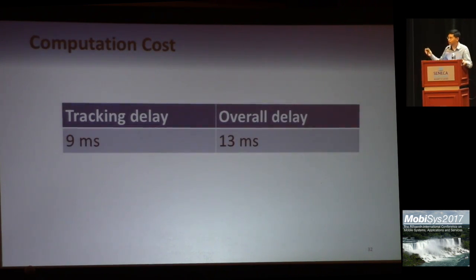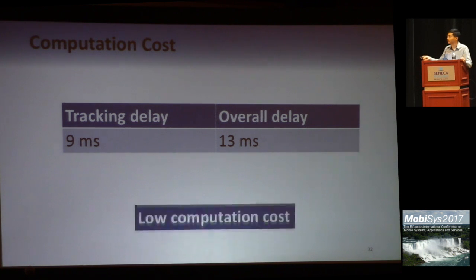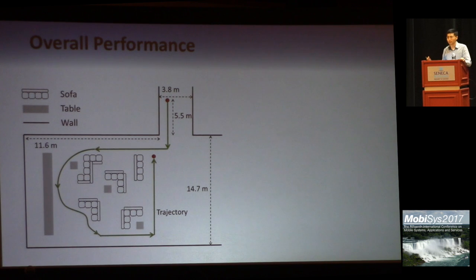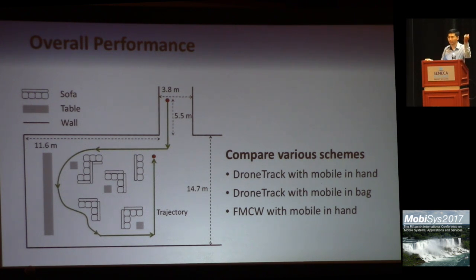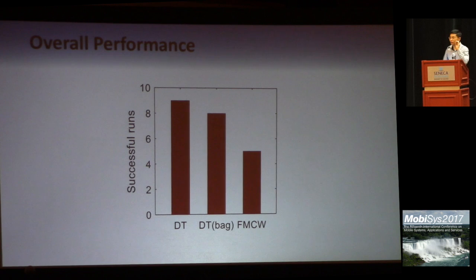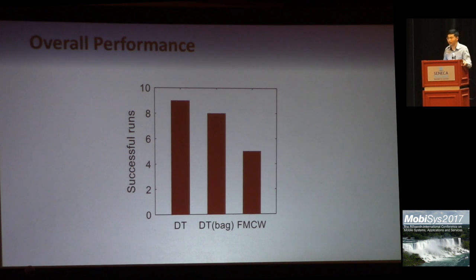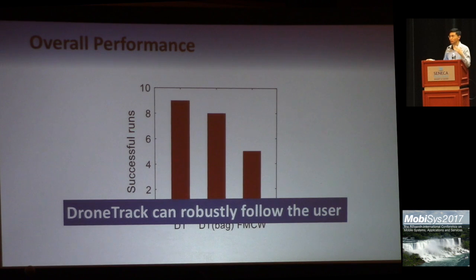The computation cost of our approach is also low. The processing delay for the tracking part is only 9 ms, and including control, the overall delay is 13 ms. To evaluate the performance of our system, we let the drone follow a user along a trace in our department building, and we compare three scenarios: drone tracks with mobile phone in hand, phone in a bag, and the system using only FMCW for tracking. If there is a tracking loss, we consider that trial as a failure. Our approach outperforms traditional FMCW in terms of successful runs, indicating the robustness of our system.